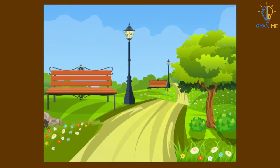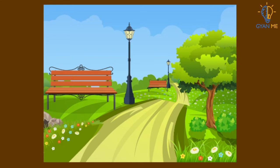How many objects can you see in this picture? Trees, flowers, leaves, maybe benches and lampposts, isn't it?